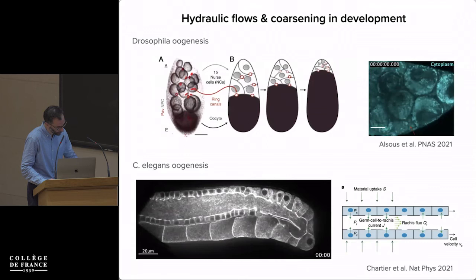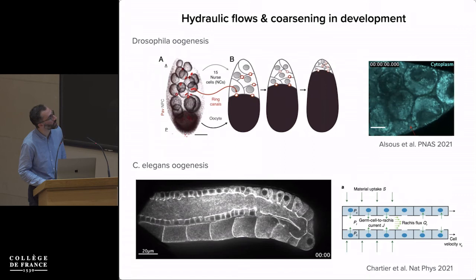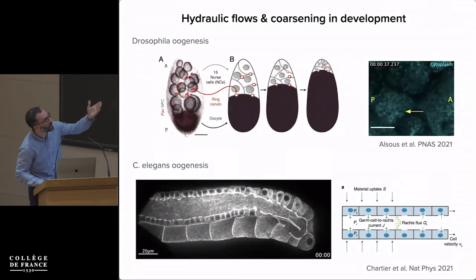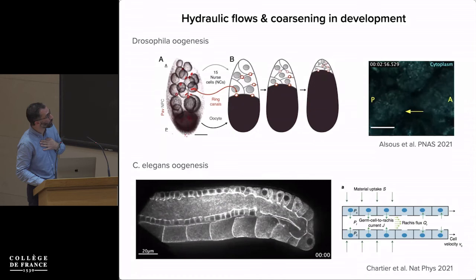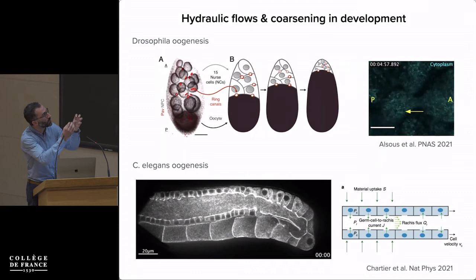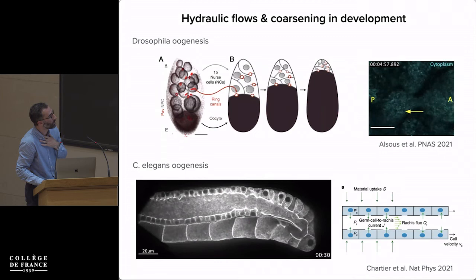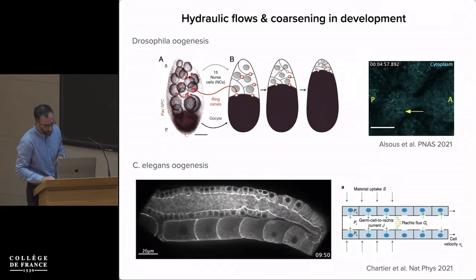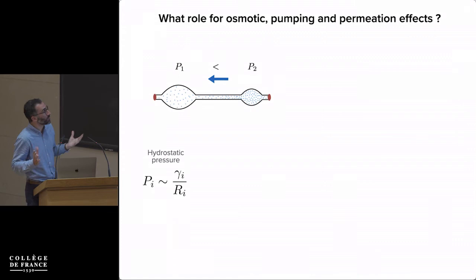This is analogous to the balloon experiment — if you connect two balloons, one empties into the other. A similar process has been seen in oogenesis: a beautiful paper from Adam Martin's lab shows flows through ring canals in the germarium explaining why all germ cells empty themselves into the future oocyte. A related process occurs in C. elegans oogenesis, where smaller cells empty into larger cells.